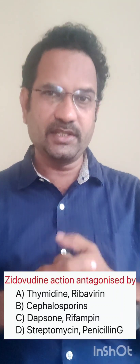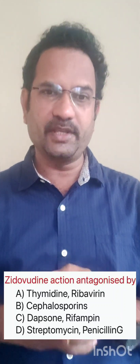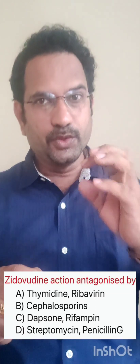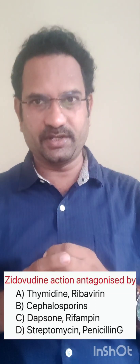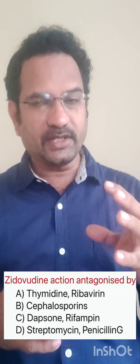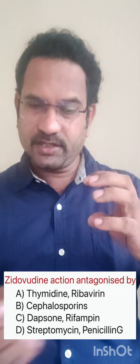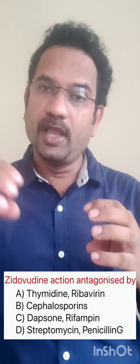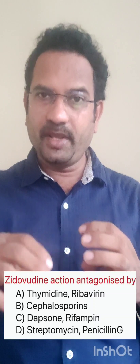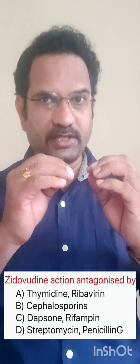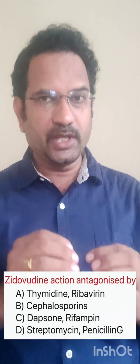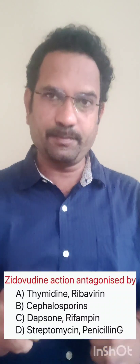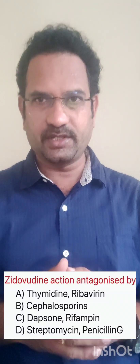When its action is antagonized — ribavirin is a drug which inhibits nucleotide phosphorylation. Zidovudine gets activated by attaching phosphate groups, and this attachment of phosphate is inhibited by ribavirin. So ribavirin makes zidovudine ineffective. Zidovudine shows its action when it gets phosphorylated; if that step is inhibited, it cannot show its action.